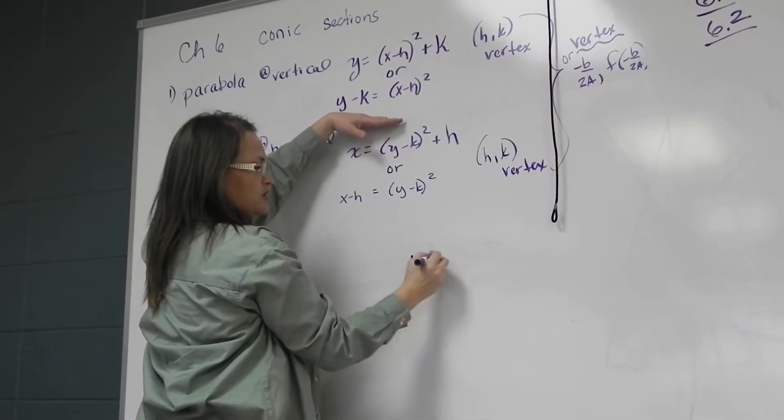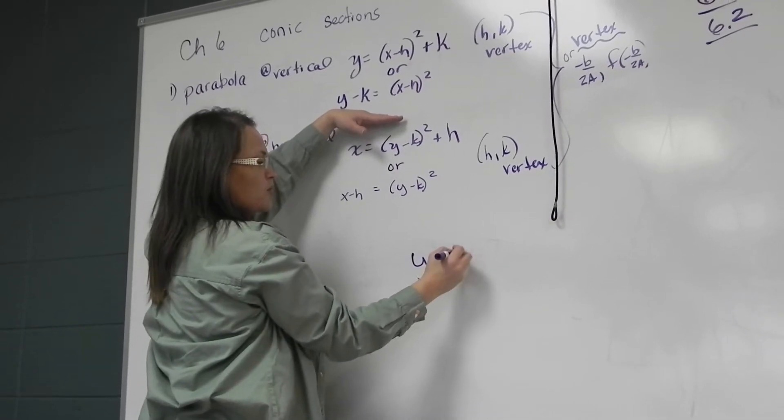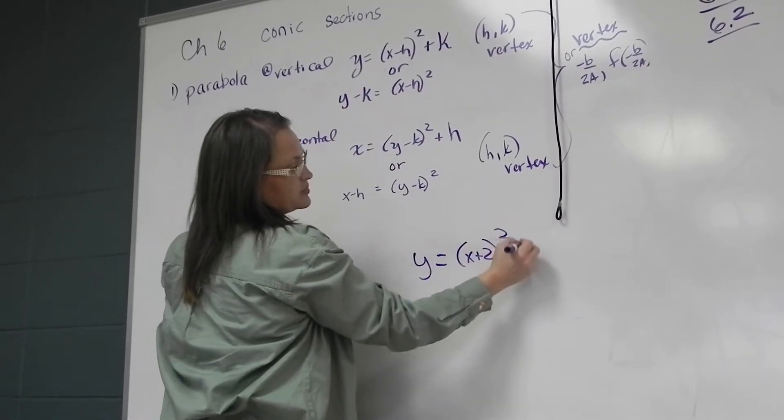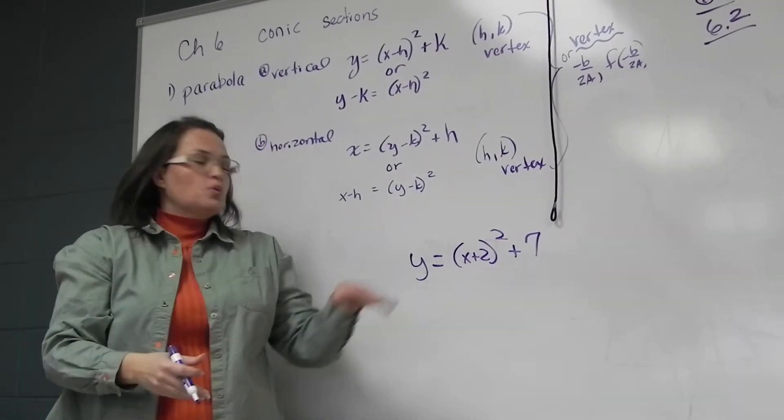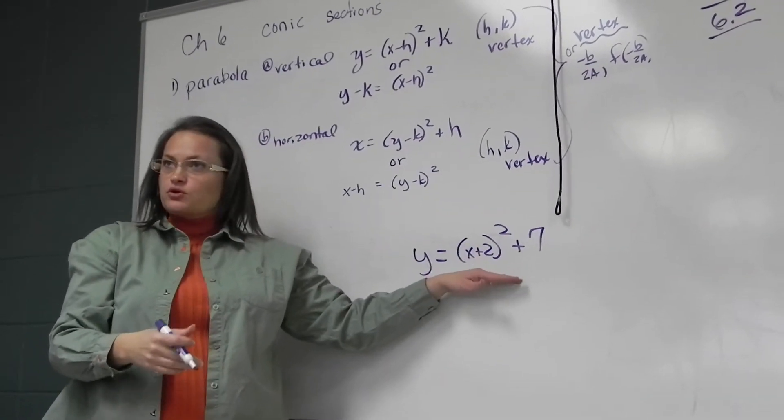We've seen this for a long time now. For example, Y equals X plus 2 squared plus 7. We would recognize that as a vertical parabola.